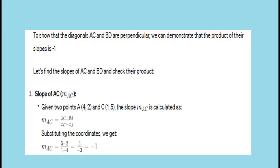Solution 2: To show that the diagonals AC and BD of the quadrilateral are perpendicular, we need to demonstrate that the product of the slopes of AC and BD is minus 1, as two lines are perpendicular if and only if the product of their slopes is minus 1. Let's find the slopes of AC and BD and check their product.